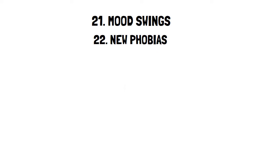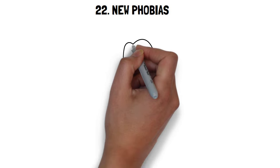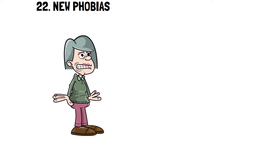Twenty-one, mood swings. Twenty-two, new phobias and fears. Suddenly things that didn't bother you like flying or driving can start to freak you out.